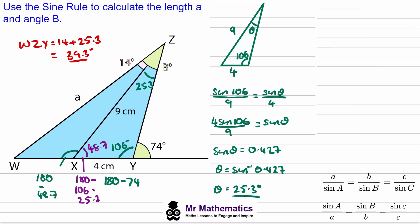Which gives us 131.3 and now we can use angles in a triangle again to work out length A.